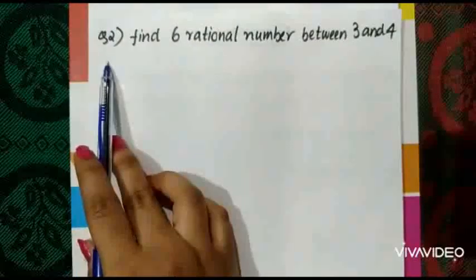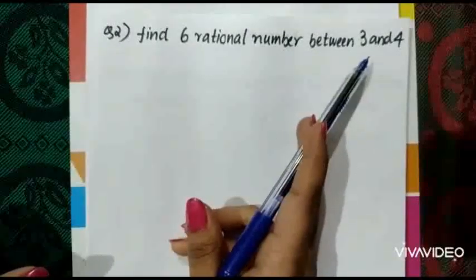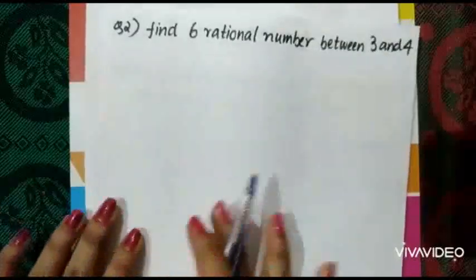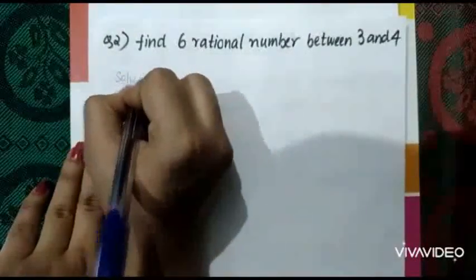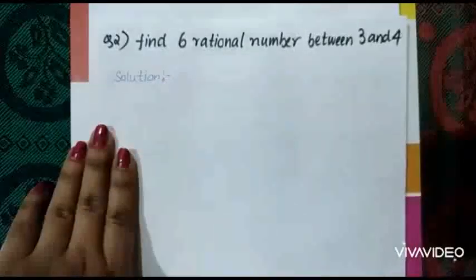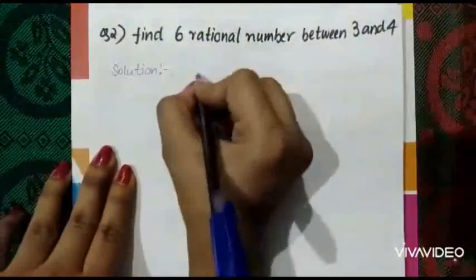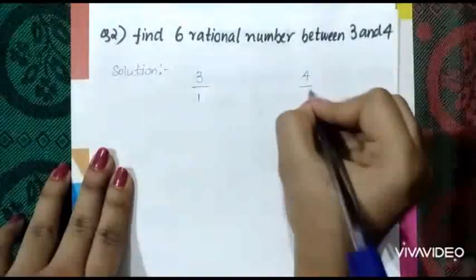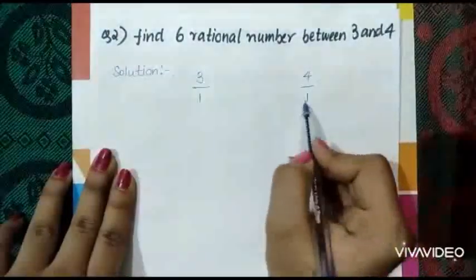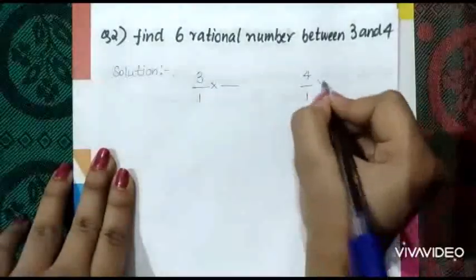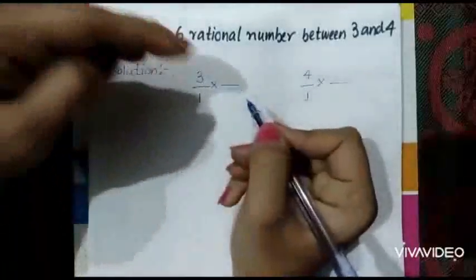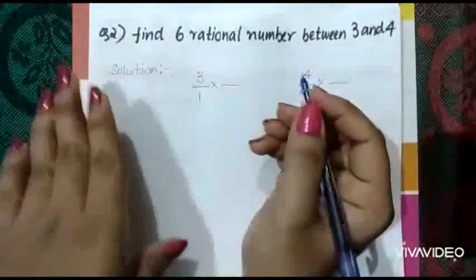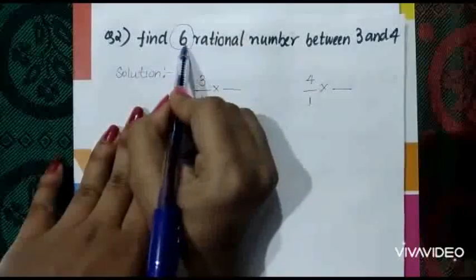Our second question is: find the 6 rational numbers between 3 and 4. As we have done in the example, write 3 as 3/1 and 4 as 4/1. Now multiply the same number on both sides in the numerator as well as in the denominator. Since we need 6 rational numbers, we should take a number greater than 6. Let us take 8.